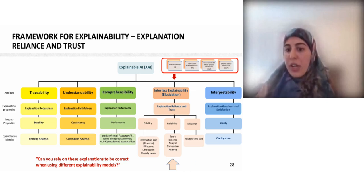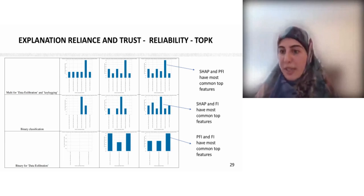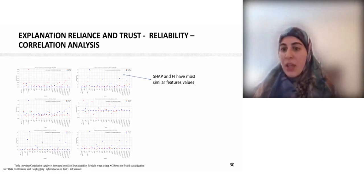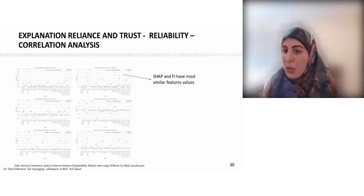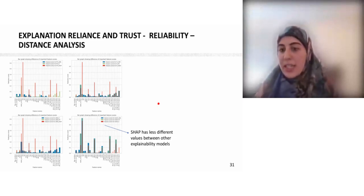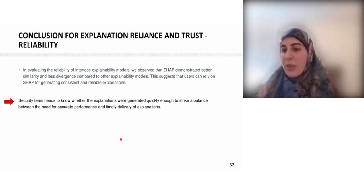In the third phase, we want to rely on the explanations being correct across different explainability models. We applied the Top-K metric for reliability and found that SHAP and PFI showed the best common top-K important features for K=3, K=5, and K=10 for multi-classification. We also applied correlation analysis and found that SHAP and PFI had the most similar feature scores. Distance analysis showed that SHAP had the least different values between all explainability models. As a result, SHAP demonstrated better similarity and less divergence compared to other models.